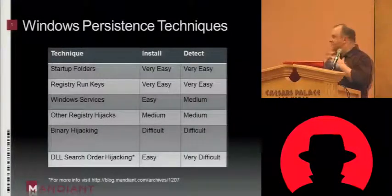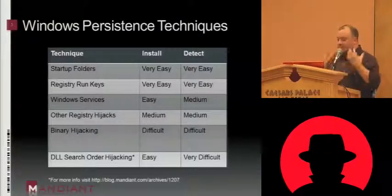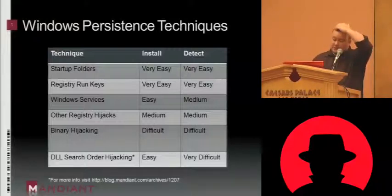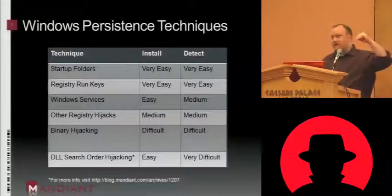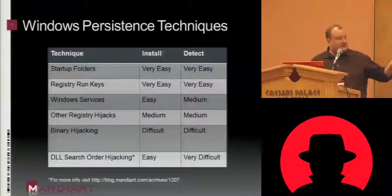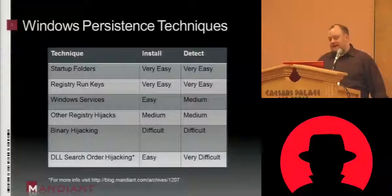Persistence mechanisms on a Windows system: the easiest is the startup folders — all you have to do is copy a file over there, and it's very easy to detect. Same with the registry run keys. As you move down this list, you can see the level of difficulty required to install something pretty much matches how difficult it is to detect. The very last one on the list is what I call DLL search order hijacking. It's still very easy to install, but very, very difficult to detect. This is not what this talk is about.